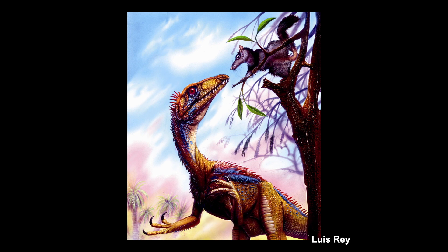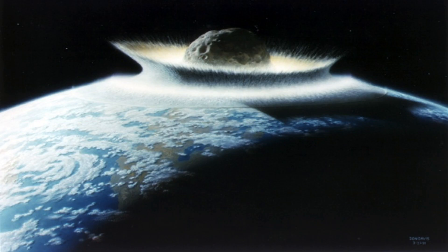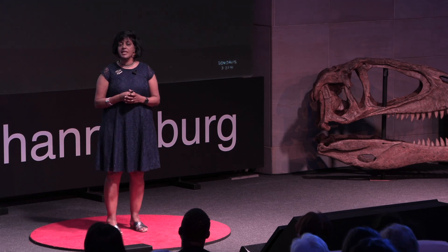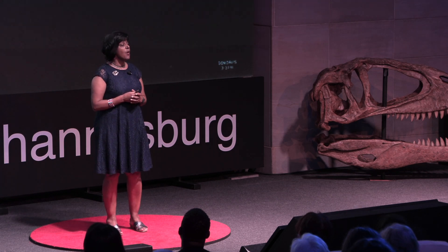And then, 65 million years ago, a major catastrophe fell on earth. It was so colossal that 75% of all life that existed went extinct. Of all the dinosaurs that lived on the planet, only the birds survived.